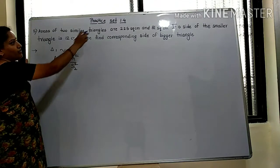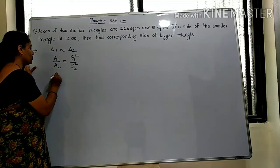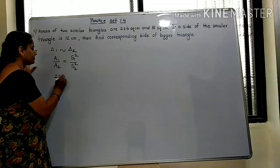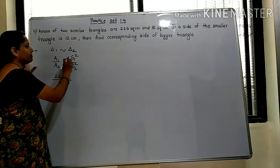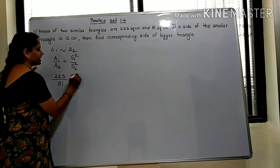So Area 1 of the bigger triangle is 225. Area 2 of the smaller triangle is 81. Now we need to find the side of the bigger triangle.